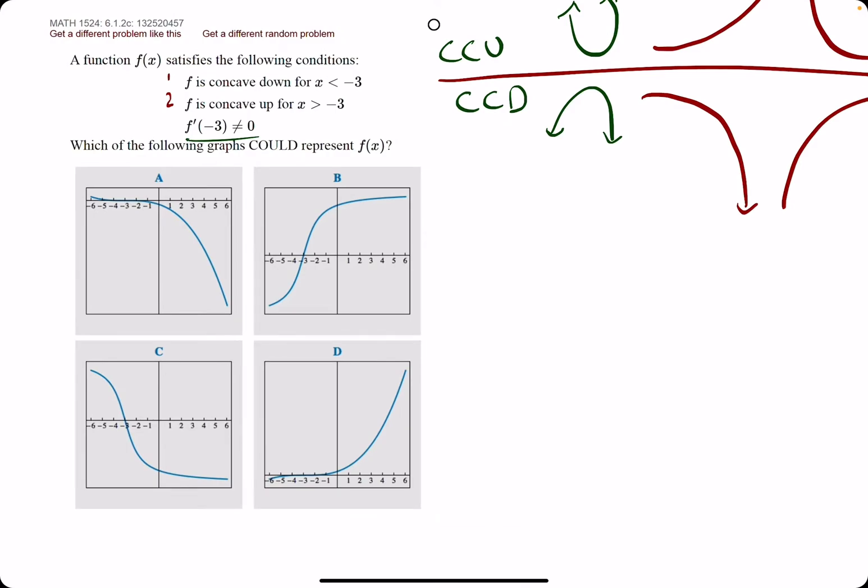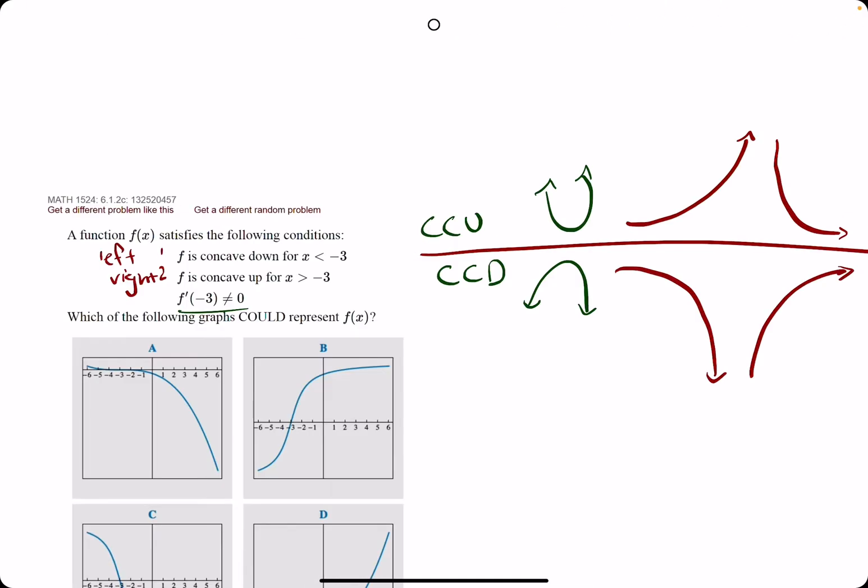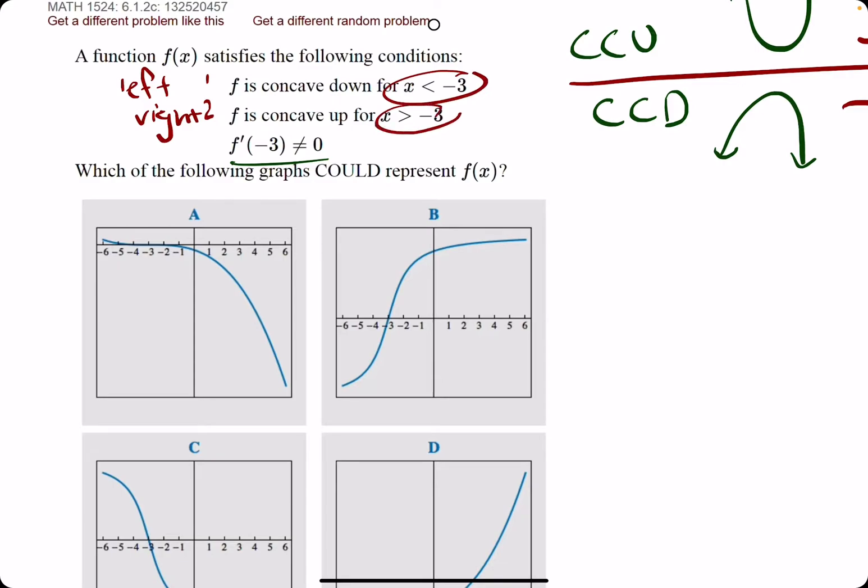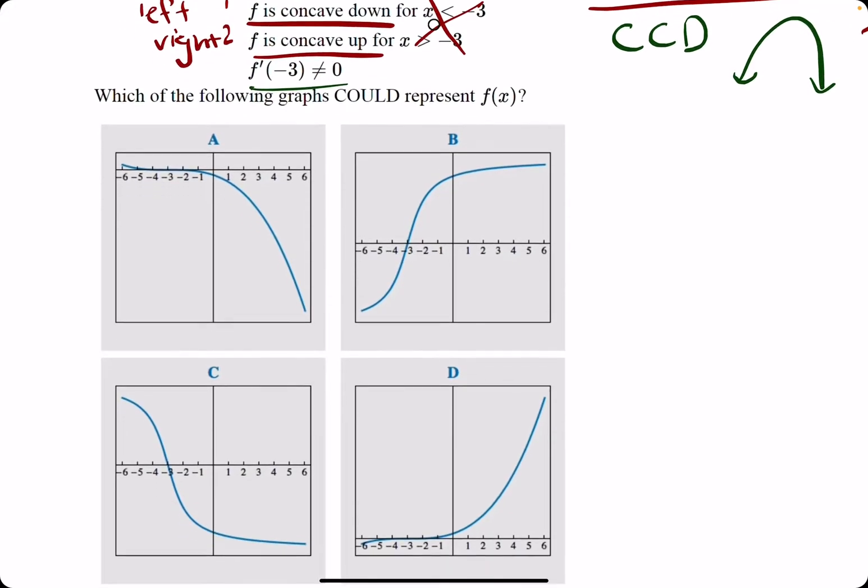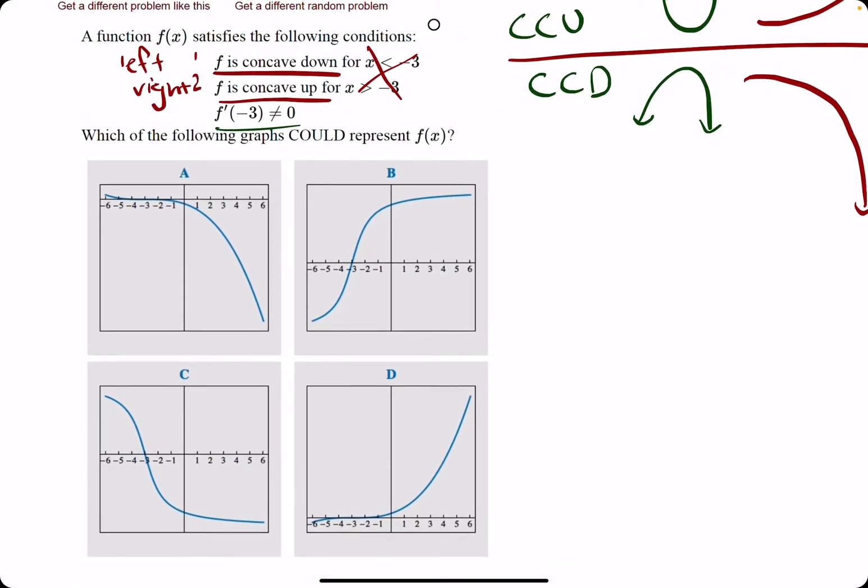When we read these statements, these first two statements, one and two, are describing how the graph is changing from left to right. We don't need to really focus on these inequalities, these intervals here and here, because all they're saying is that the graph starts concave down and then it's changing to concave up.